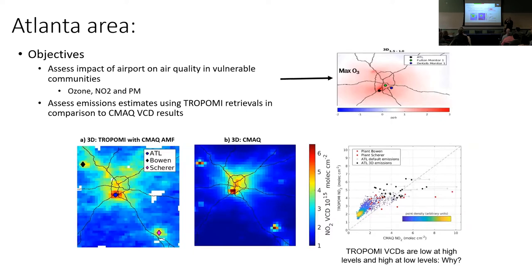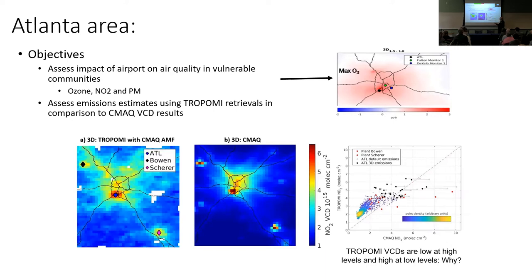This started under the prior HICAS program and has evolved. We've been looking at the impact of the Atlanta airport and other sources around the Atlanta area on air quality, both from a modeling approach and using TROPOMI. This is the TROPOMI retrieval and this is CMAQ — they look very similar. These two features are two major power plants, one of the largest in the southeast. This is Atlanta itself, with one of the busiest freeways in the southeast at a few hundred thousand cars per day.